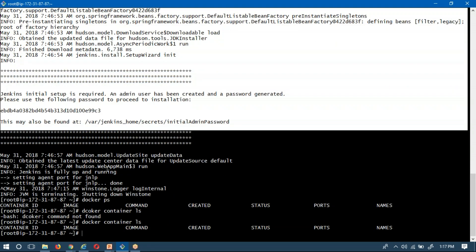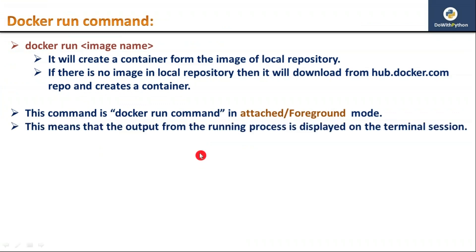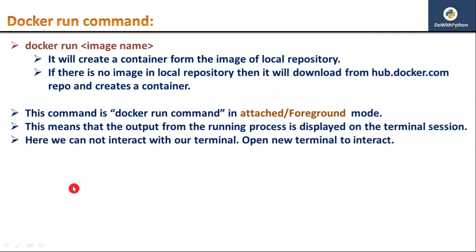If you want to interact with your terminal you have to stop this process by pressing Ctrl+C, but if you do that your container will stop. Running 'docker ps' confirms no containers are running. This basic command is called attached mode or foreground mode because all logs are shown on the terminal itself, and to interact with the terminal you'd need to open a new terminal — but this is not the best way to create a container.